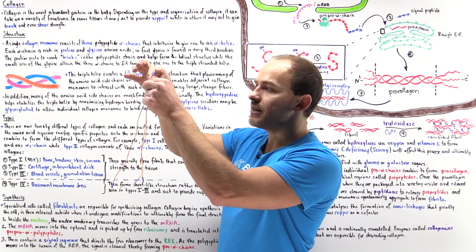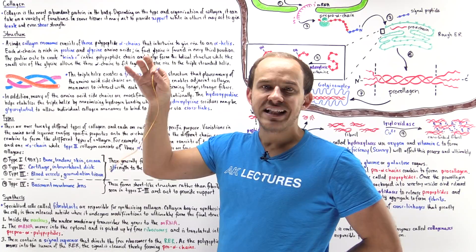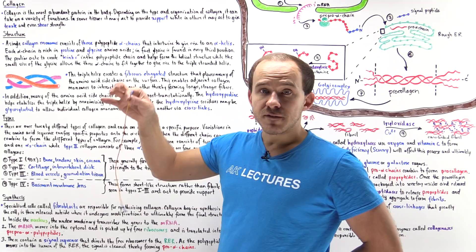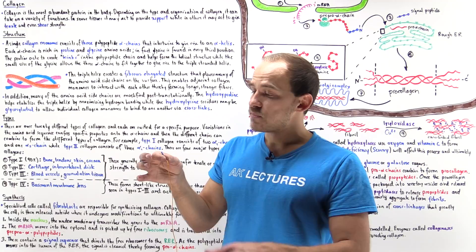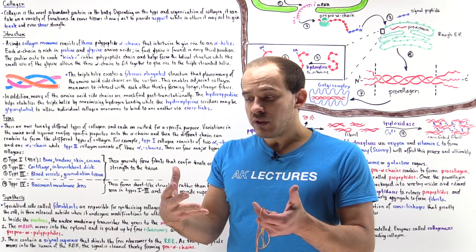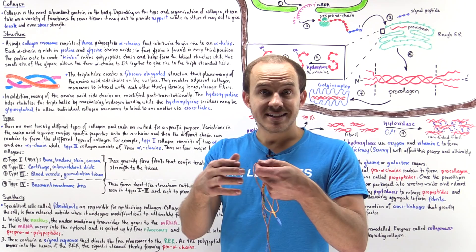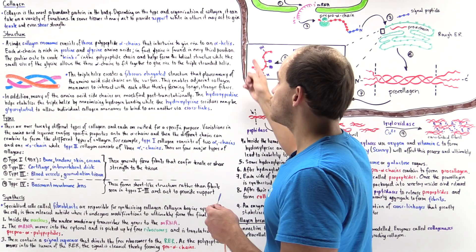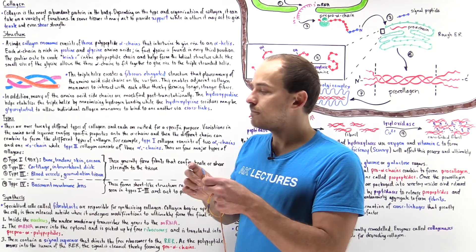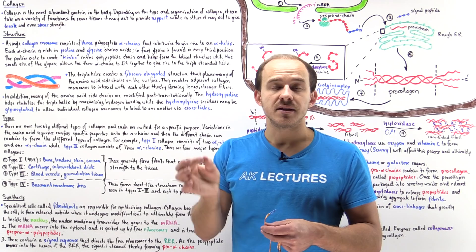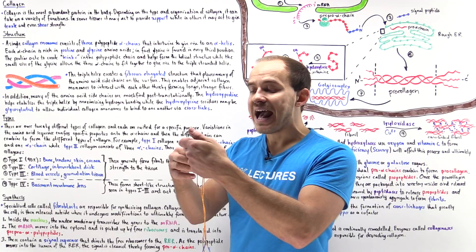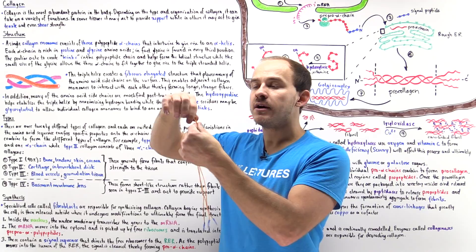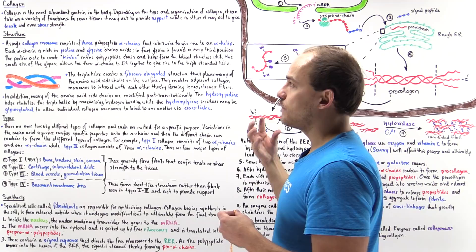If we take one of these alpha chains and study the amino acids in it, we're going to see two predominant amino acids: glycine and proline. In fact, every third amino acid in the alpha chain actually consists of a glycine. Proline has a very bulky structure and it gives kinks within the alpha chain, and it's these kinks that allow the creation of this triple-stranded alpha helix. Glycine is the smallest amino acid and it creates space for these bulky alpha chains to actually interact together to create this very compact alpha helix. So proline and glycine actually serve very important purposes.